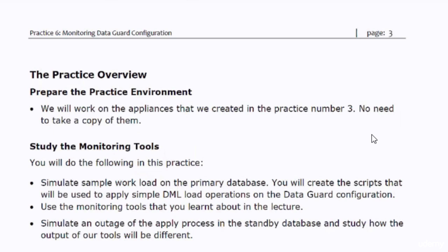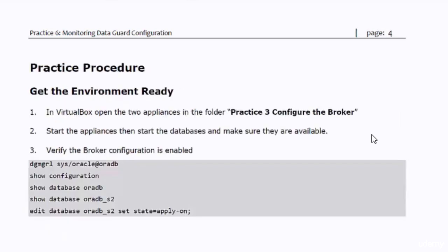Nothing special should be done to prepare for this practice. As usual, just open the appliances and start the databases. In this practice I will simulate some workload on the primary database, simulate an outage of the apply process on the standby database, and then study how this affects the output of the Data Guard monitoring tools. To get the environment ready, open the two appliances in the folder 'Practice 3 - Configure the Broker', start the appliances, and start their databases.